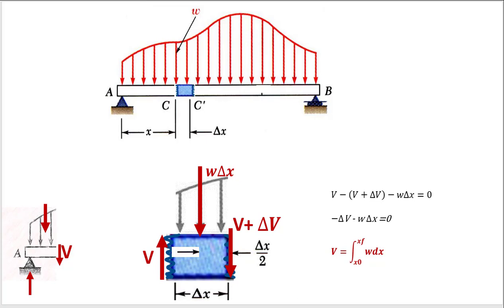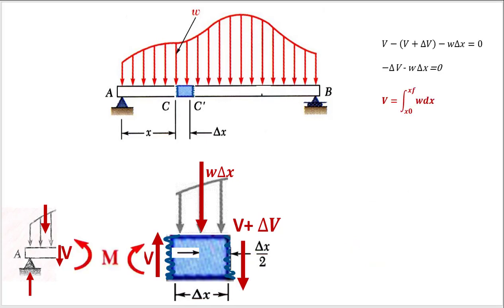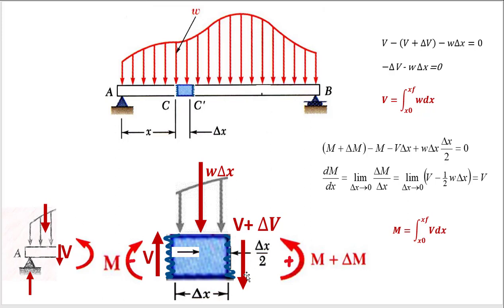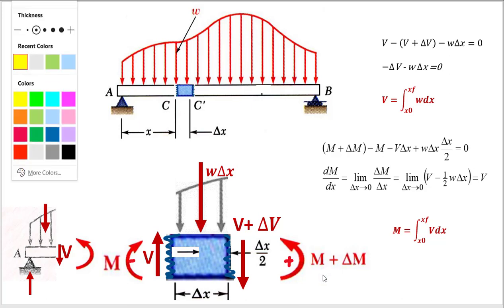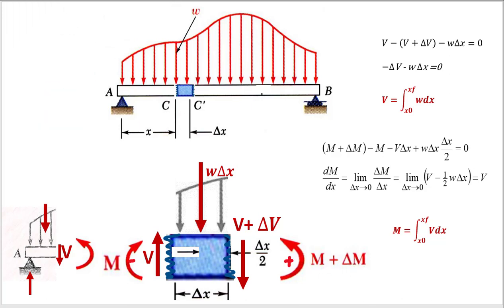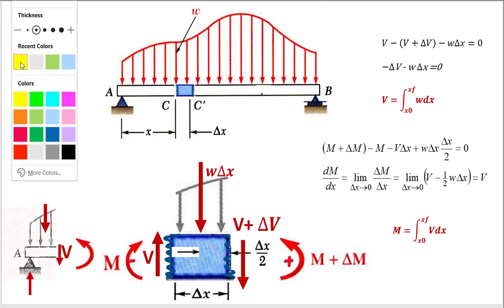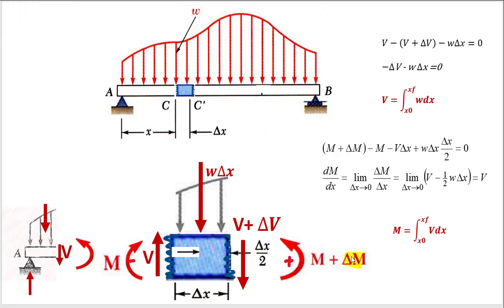Moving from the internal shear to the internal bending moment. Again, we're going to start with one moment on one side of this element, and by the time we get to the other side, that internal moment is going to have changed some little bit. So instead of adding together the forces, let's go ahead and add together the moments and see how the moment changes across each little element.